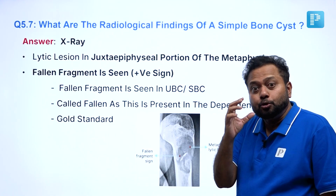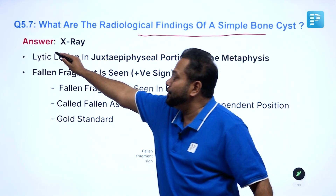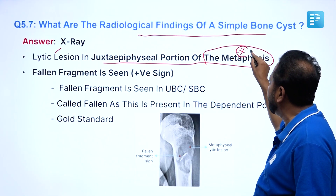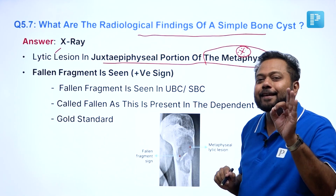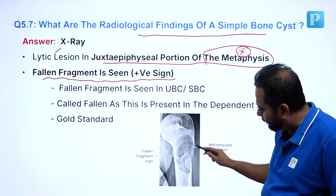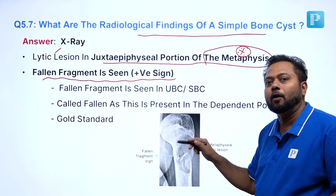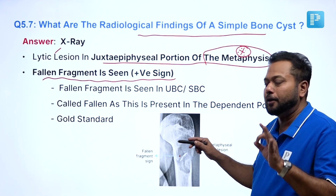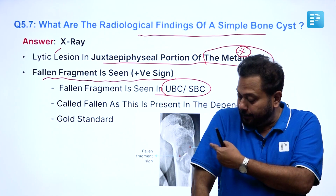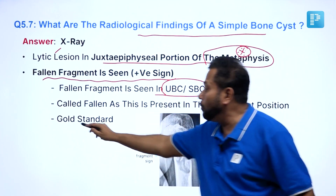The second important thing is the radiological findings of simple bone cyst (unicameral bone cyst). Number one, it shows a lytic lesion affecting the juxta-epiphyseal portion of the metaphysis. It shows the classical, repeatedly asked sign — the fallen fragment sign. Looking at the upper end of humerus, you can see a lytic lesion with a small bone fragment that has fallen inside. Fallen fragment sign is a hallmark radiological sign of unicameral bone cyst. It is gravity dependent — when the arm is down, the fragment falls one way; when the arm is lifted and the X-ray is taken, it falls the other way. That is why it is called the fallen fragment sign — a gold standard sign.